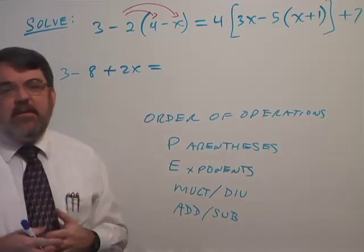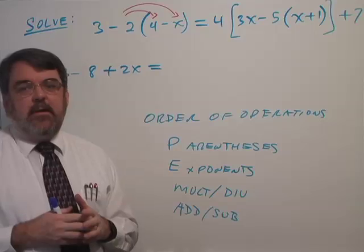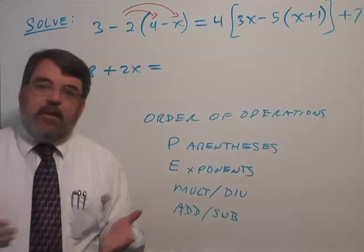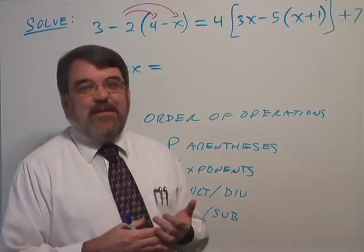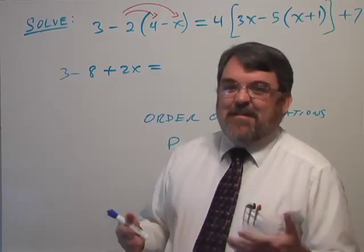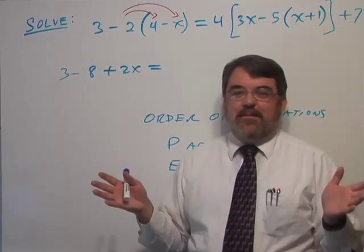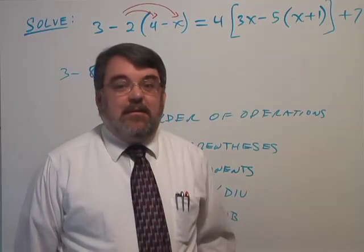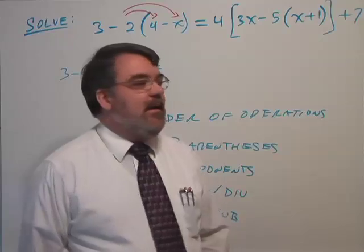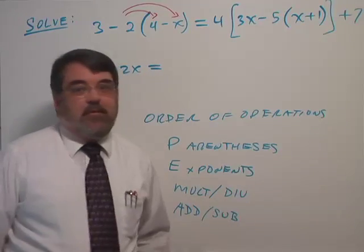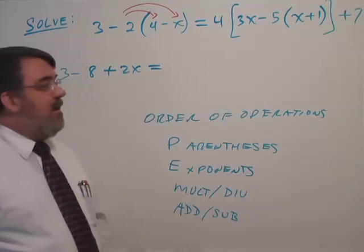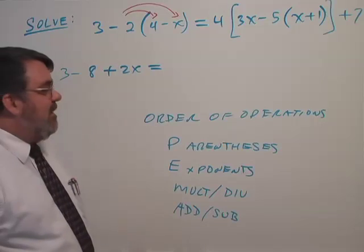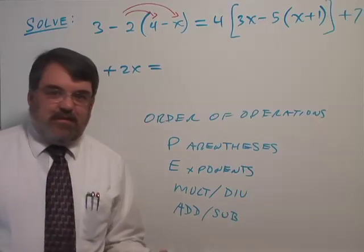These order of operations came into being probably a hundred years ago, maybe a little bit more. I've seen an algebra book from 1870 in which the author lamented the fact that there was no standard way to simplify an algebra expression. People were doing it their own way in their own textbooks. Somewhere between 1870 and today, probably shortly after 1870, there arose a consensus.